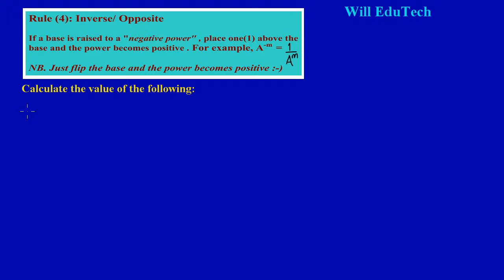Let's look at a common proof. Why is it that when a base is raised to a negative power, all we simply do is place one above the base and the power becomes positive? Let's say I had a base 'a' squared being divided by a base 'a' raised to the fourth power.